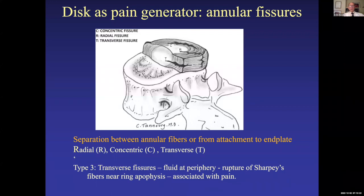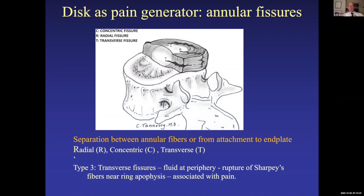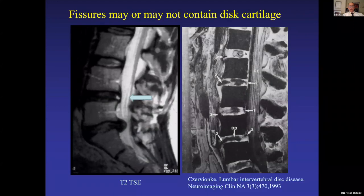Another possible pain generator: when the disc degenerates it may fissure. You can see circumferential annular fissures around the edge of the disc; you may also have radial and transverse fissures. These used to be called tears, but that's a pejorative term. Type 3 transverse fissures — where you often have fluid at the periphery of the disc recognizable on T2 MR — may be associated with pain because the annulus is innervated.